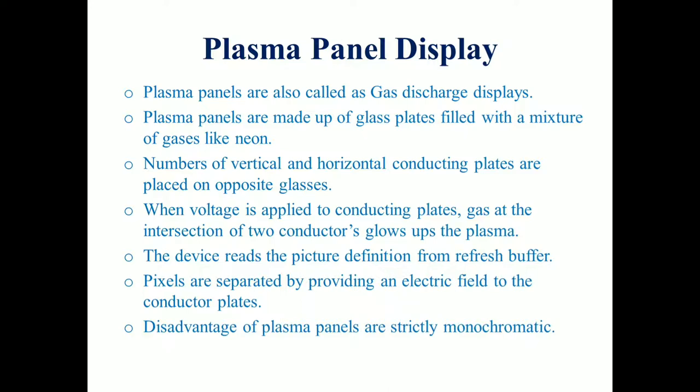A disadvantage of plasma panels is that they are strictly monochromatic. Monochromatic means mono - single, and chrome - color, meaning a single-color image is shown on the screen.